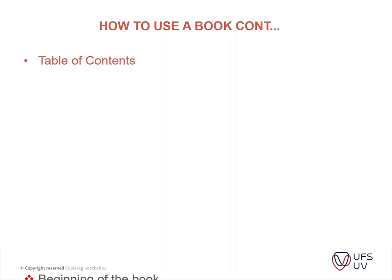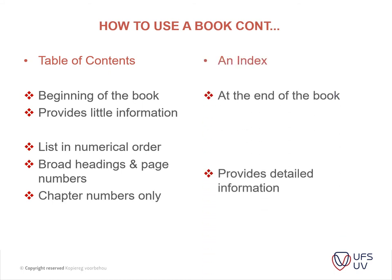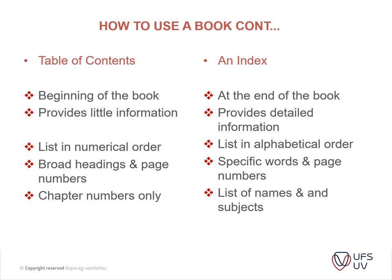On this page, I'm going to talk about the table of contents and index and where to find them in the book. The table of contents is found at the beginning of the book, and the index is at the end. The table of contents provides little information, whereas the index provides detailed information. The table of contents presents information in numerical order, whereas an index lists information in alphabetical order. The table of contents provides headings and page numbers, while the index provides specific terms and page numbers. The table of contents provides chapter numbers only, and the index provides a list of names and subjects.